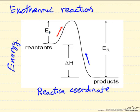What I've shown here is the diagram for an exothermic reaction, energies plotted on the y-axis, and reaction coordinate, which is essentially the progress of the reaction where reactants are on the left, products are on the right.